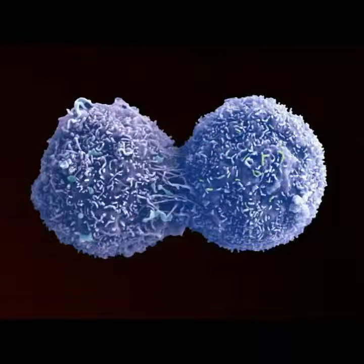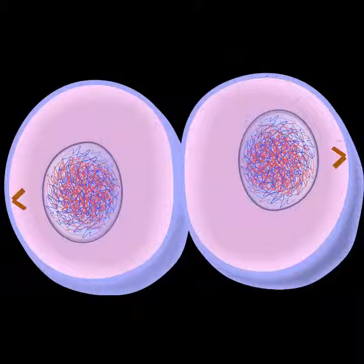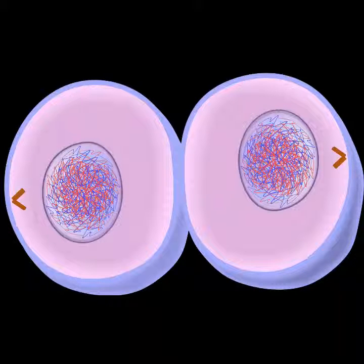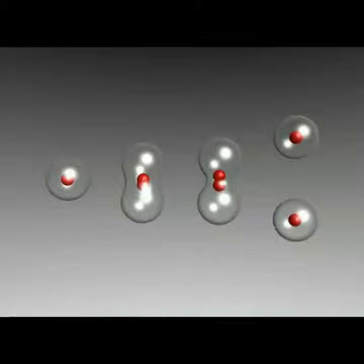Cell division is a process by which a cell divides into two new daughter cells. Before cell division, the cell has to replicate itself. Each daughter cell is given the same genetic information, kind of like a genetic library.